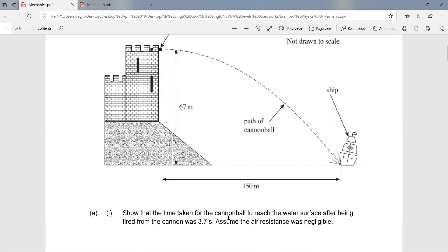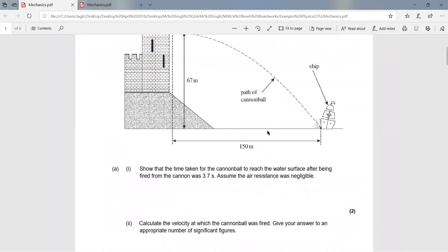First, we need to show that the time taken for the cannonball to reach the water surface after being fired from the cannon was 3.7 seconds. The second part of the question asks to calculate the velocity at which the cannonball was fired.